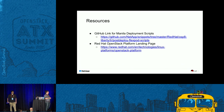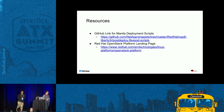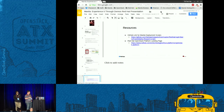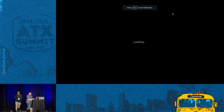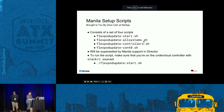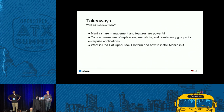For those curious about the source of the scripts, the GitHub link is right here. You can check it out, run it, and see how it all works. If you want to learn more about what Red Hat is doing with OpenStack platform, you can check out the landing page for more information. What did we learn today? Share management and features are very powerful in Manila, as well as making use of replication, snapshots, and consistency groups for enterprise applications. You saw the WordPress thing and the mentionings of SAP HANA.